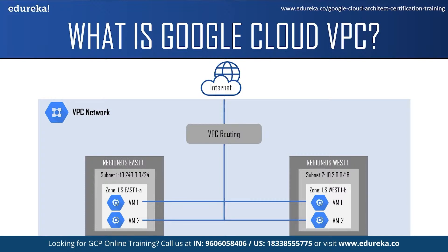A subnet, or subnetwork, is a segmented piece of a larger network. Virtual machine instances can be created in the subnet, and instances can communicate with each other in the same VPC network using private IP addresses. There are two virtual machines in the US East subnet and two in the US West subnet. These virtual machines can access the internet through VPC routing, which decides how to send traffic from virtual machine instances to the destination — either other virtual machine instances or the internet.